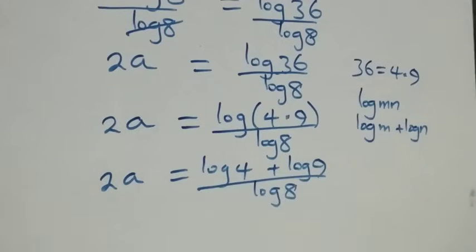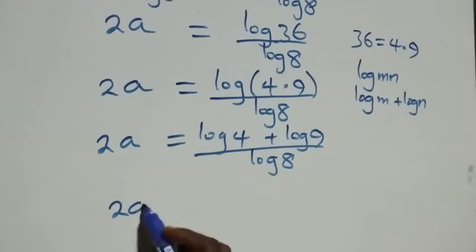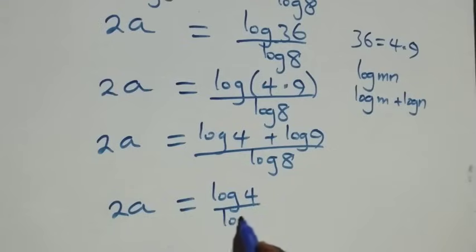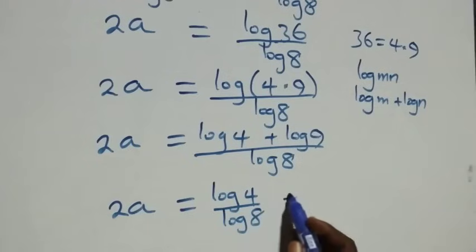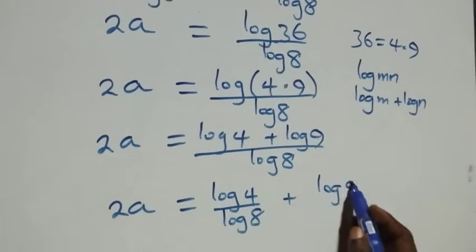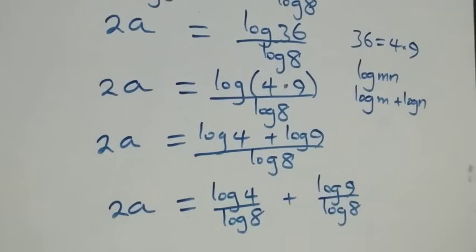From here we separate this into two fractions, and we have 2a equals log 4 over log 8, plus log 9 over log 8.